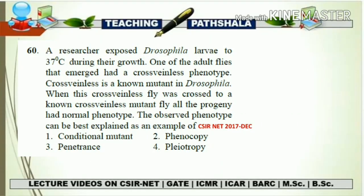Now let's talk about the question taken from 2017 December CSIR Net. A researcher exposed Drosophila larvae to 37 degrees Celsius during their growth. One of the adult flies that emerged had a crossveinless phenotype. Crossveinless is a known mutant in Drosophila. When this crossveinless fly was crossed to a known crossveinless mutant fly, all the progeny had a normal phenotype. The observed phenotype can be best explained as an example of which of the following? Options: conditional mutant, phenocopy, penetrance, or pleiotropy.